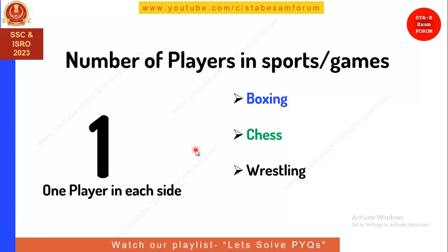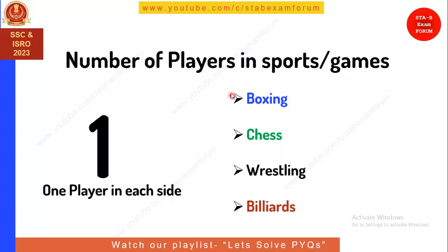Wrestling is also one player on each side — professional wrestling like what you have seen in the Sushil Kumar or Yogeshwar Dutt cases, not tag-team WWE style. Billiards, associated with a famous personality like Pankaj Advani, also has one player on each side, as does snooker. So boxing, chess, wrestling, and billiards all have one player on each side.